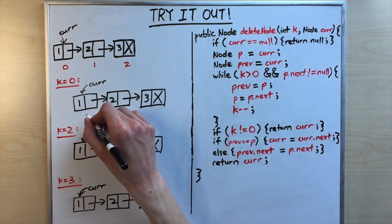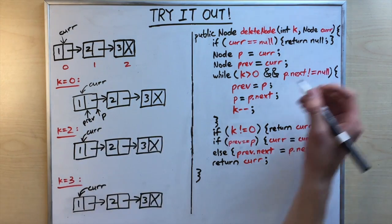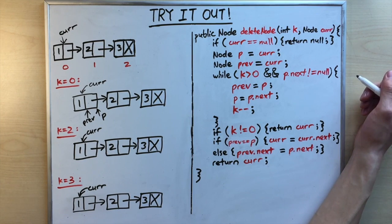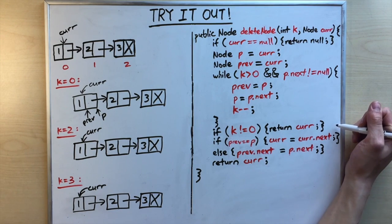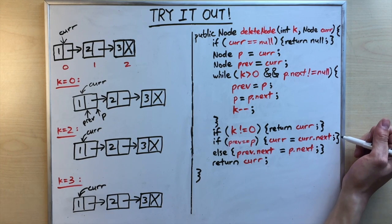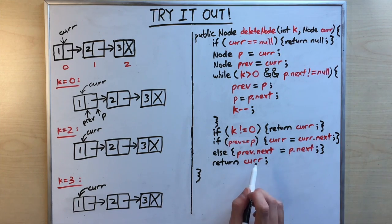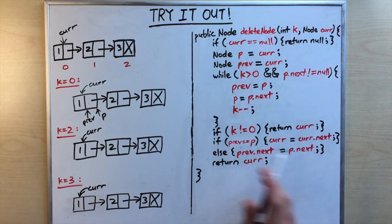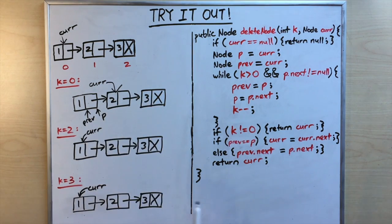For k equals zero: cur is not null, so we set p and prev both to cur. The while loop condition is false since k equals zero, so we skip it. We check if k does not equal zero — also false. We check if prev equals p — true — so we set cur equals cur.next, skipping the first node. We return the new cur.